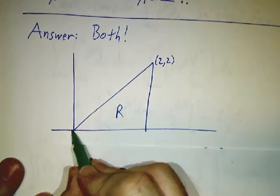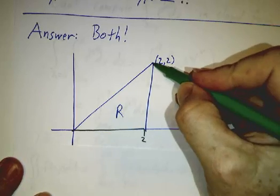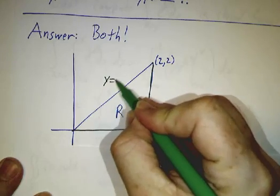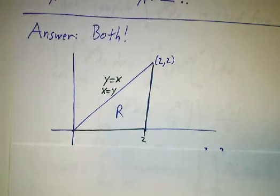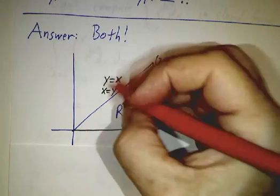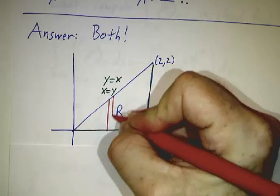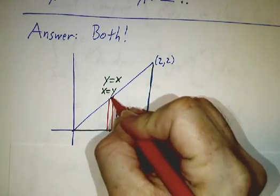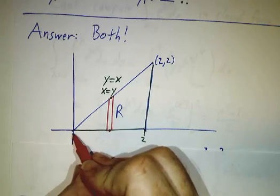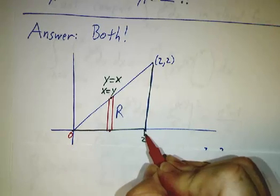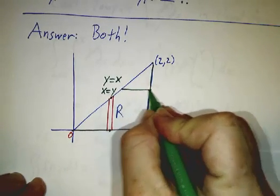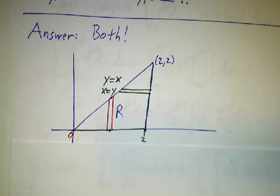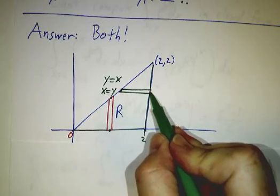Here's our triangle. It's between the x-axis, the line x equals 2, and the line y equals x — which you can also think of as x equals y. If you want to think of it as Type 1, you draw a bunch of columns: each column starts at y equals 0 and goes up to y equals x, with the leftmost column at x equals 0 and the rightmost at x equals 2. But you could also do it in terms of rows, where each row starts at x equals y and goes all the way up to x equals 2.